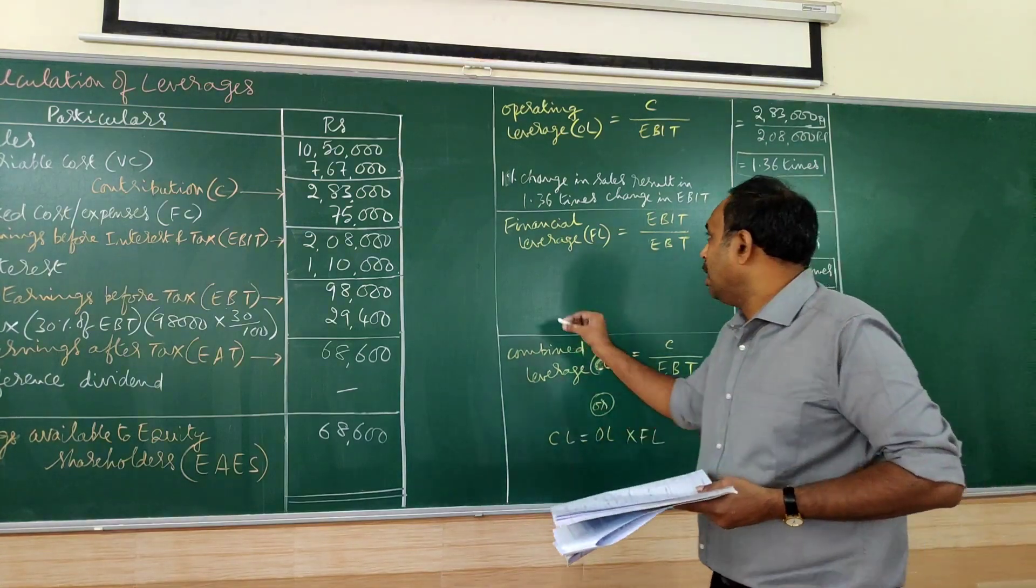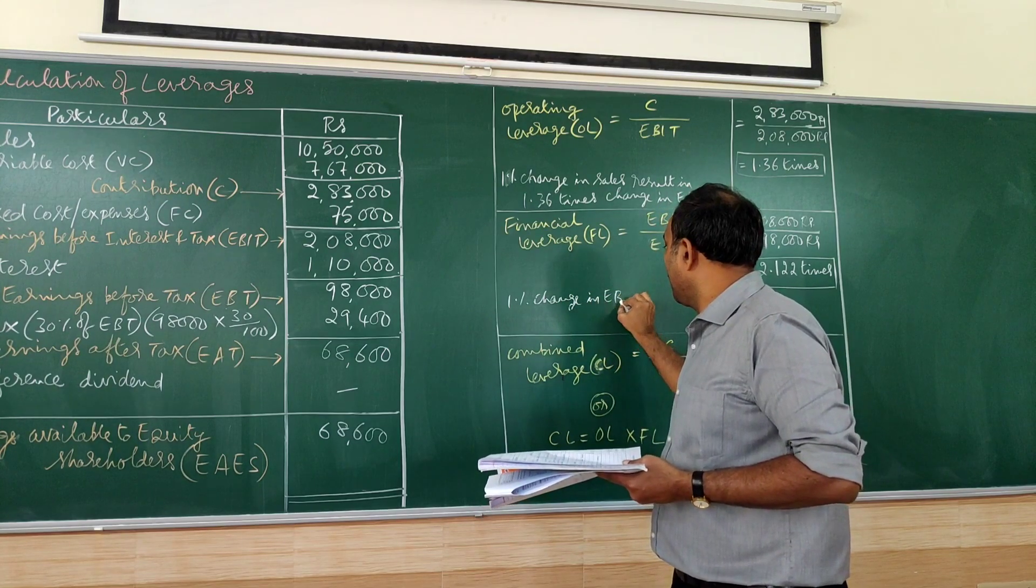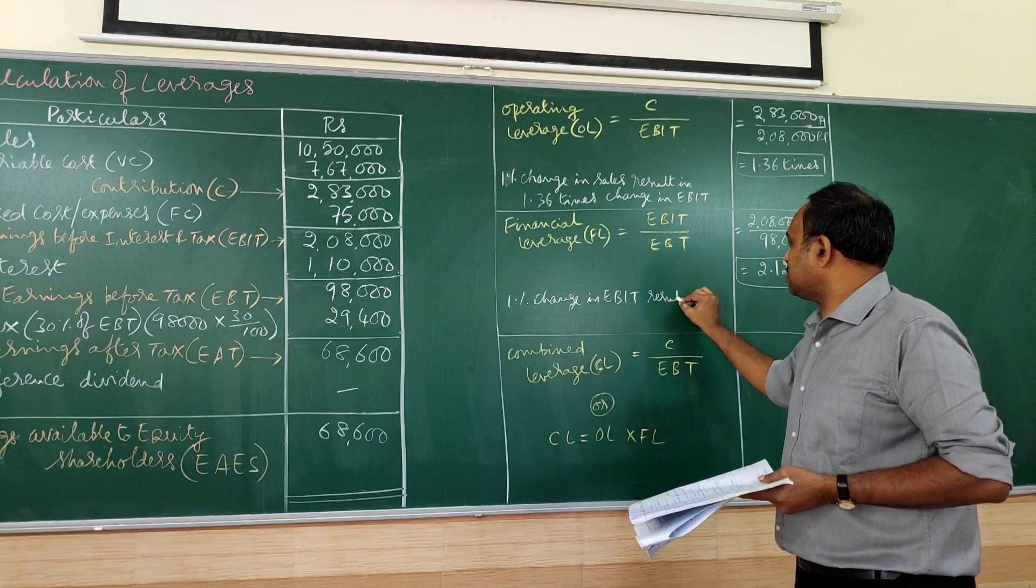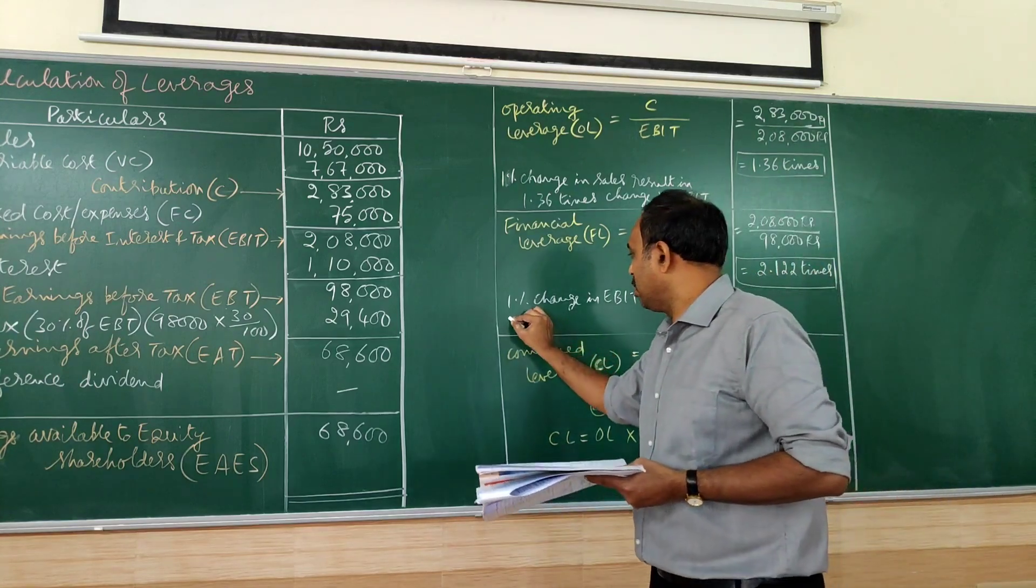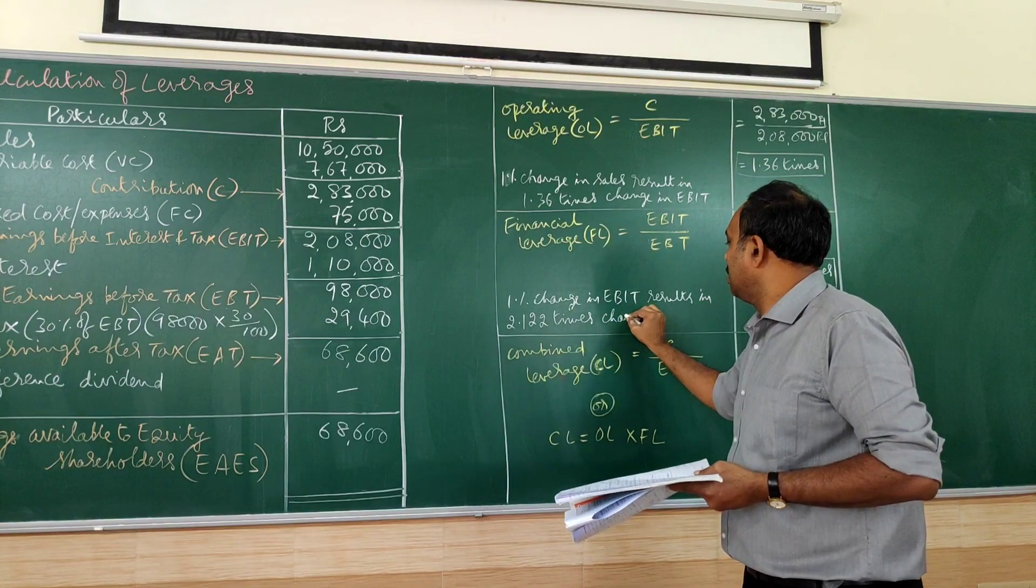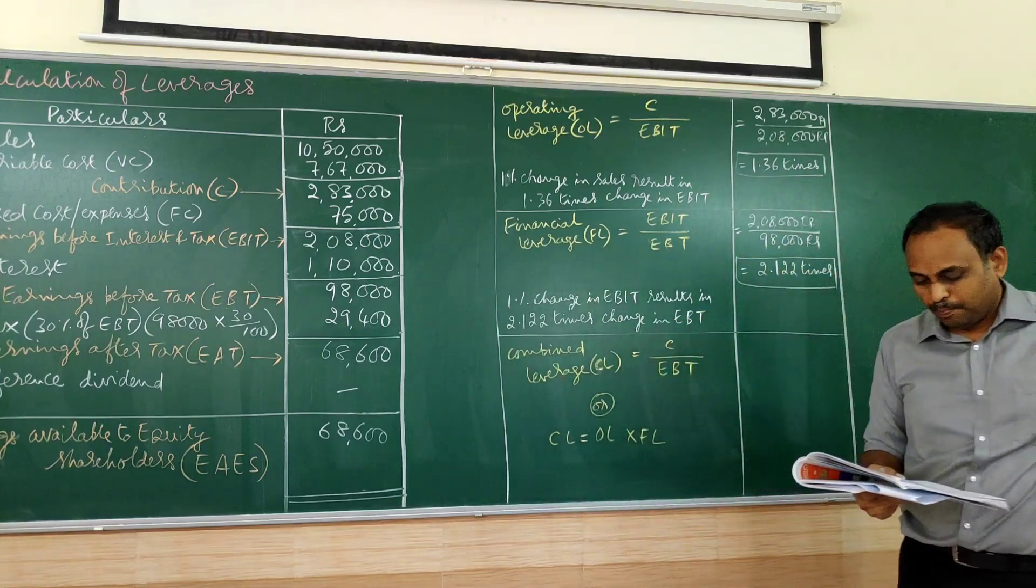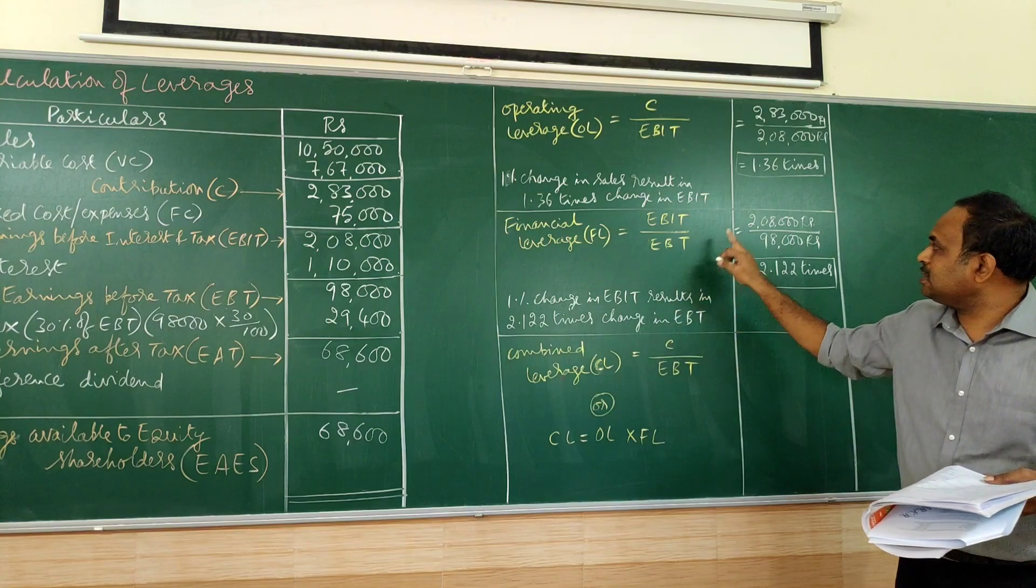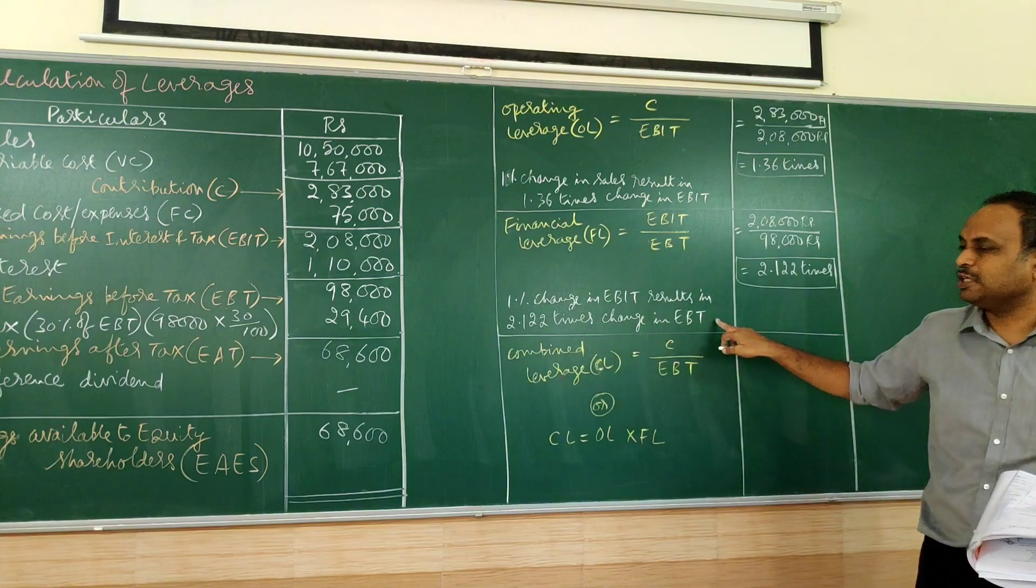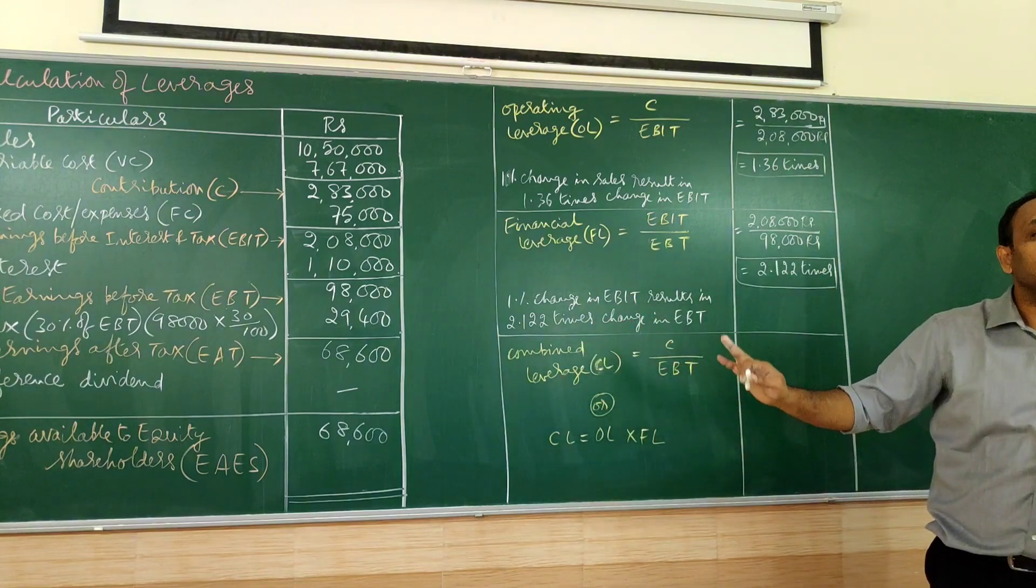1% change in EBIT results in 2.122 times change in EBT. So here 1% increase in EBIT will give 2.122 times change in EBT. This is also good because 1% here is more than 1%. That is a good sign.